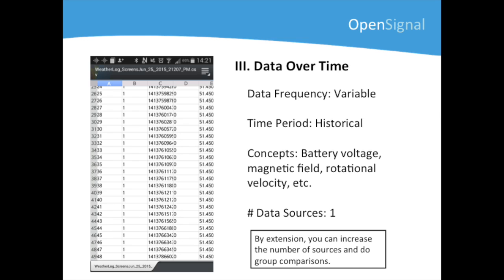Similarly to what we saw for OpenSignal, the third layer of WeatherSignal corresponds to the exported data collected by your phone. WeatherSignal has exporting capabilities that let you save the data you collected and transfer it to your computer. This exported data includes not only the readings displayed in the different dashboards, but a lot of other fields such as information related to your phone's battery voltage or measures of temperature and humidity, if your phone has the required sensors. Just like with OpenSignal, two or more phones could be used to collect and compare data.